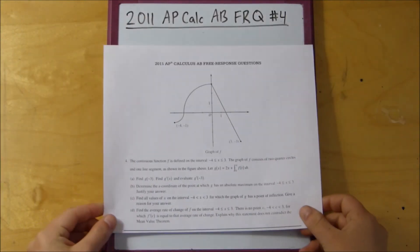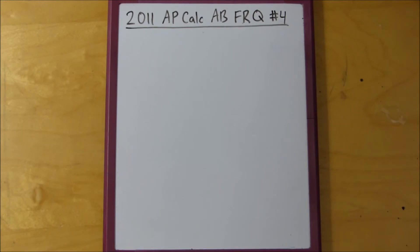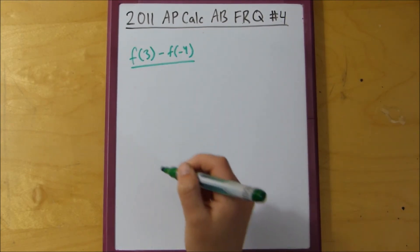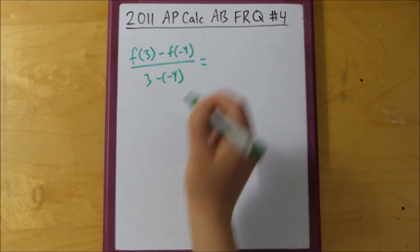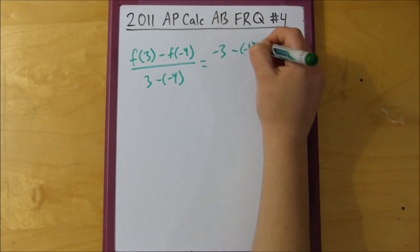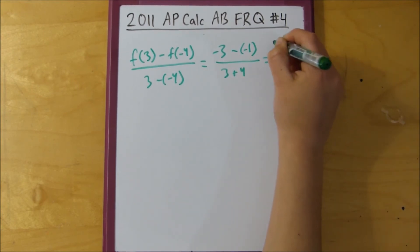All right, and then the final problem says to find the average rate of change of f on the interval negative 4 to 3. But, there is no point c for which f prime of c is equal to the average rate of change. Explain why this does not contradict the mean value theorem. So, to find the average rate of change, what we do is, it's basically kind of like rise over run, where you just take your, you basically find f of 3, subtract that from f of negative 4, and then subtract the two x values. So, f of 3, we said was negative 3, then f of negative 4 is negative 1, and then we have 3 plus 4. So, the average rate of change is equal to negative 2 over 7. So, that's the first part of the question.